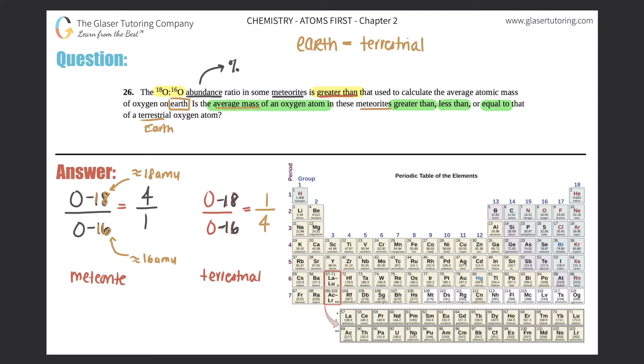Now they're saying is the average mass of an oxygen atom in the meteorite greater than, less than, or equal to a terrestrial oxygen atom, meaning on the Earth. Well, it's gotta be greater than. Why is that? Because they're saying that majority of the oxygen here is oxygen-18 because the ratio is much higher. But in terrestrial, but on the Earth, the oxygen-16 is much more prevalent, because the four corresponds to the 16 in the meteorite, the four corresponds to the 18.